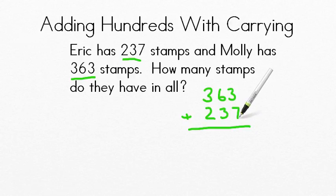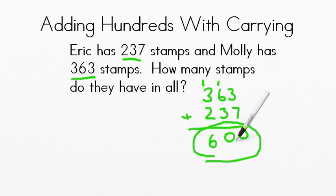If we add, using the carrying method, 7 plus 3 equals 10. Put down my 1. Regroup my 10. 6 plus 3 is 9. Plus one more is 10 again. We've got to put our 100 up there. Because 10 tens equals 100. And then add 3 hundreds plus 2 hundreds plus 100 to get the total of 600. So how many stamps do they have in all? The answer is 600. Nice work.